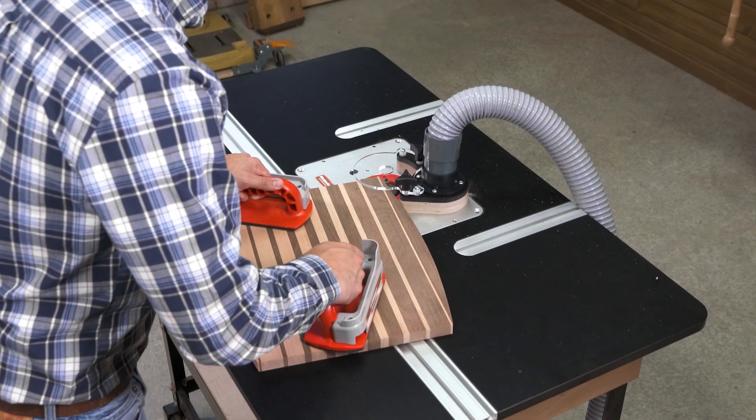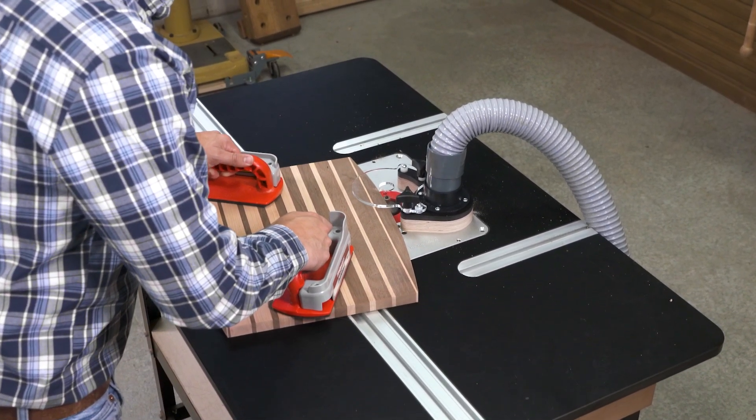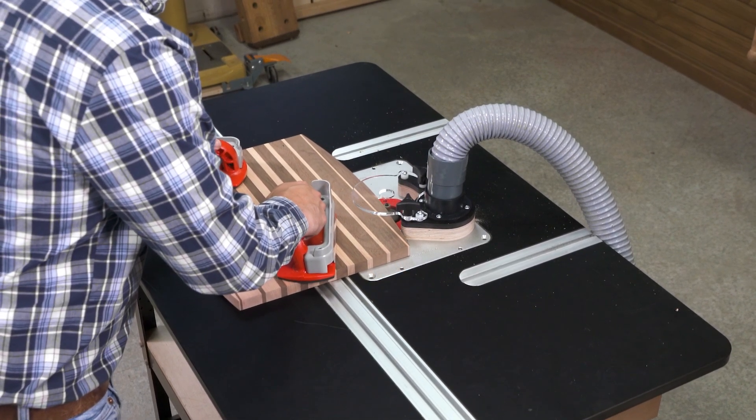Woodpecker's freehand guard covers that wide-open bit, gives you two different fulcrum points, and provides a dust collection port that works with shop vacs or dust collectors.